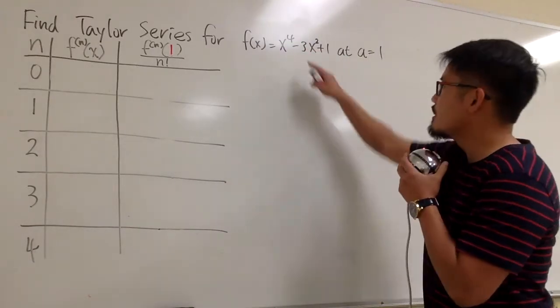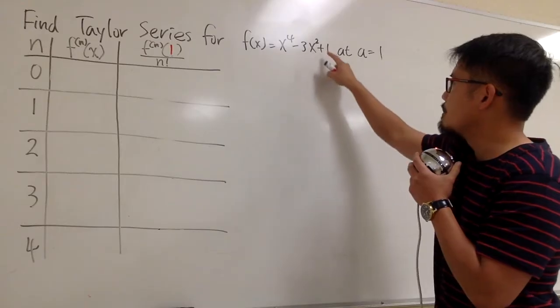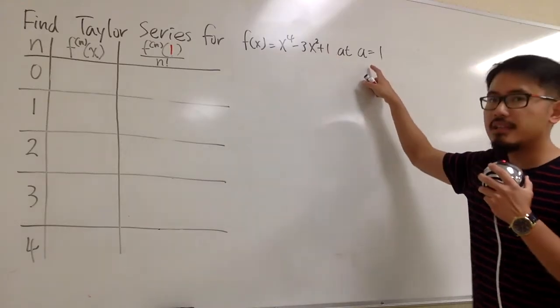We are going to find the Taylor series for the function x to the fourth power minus 3x squared plus 1, centered at a is equal to 1.